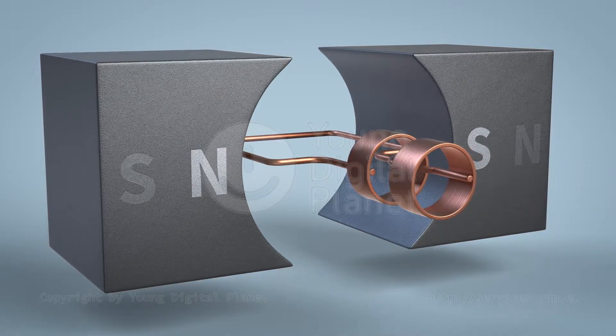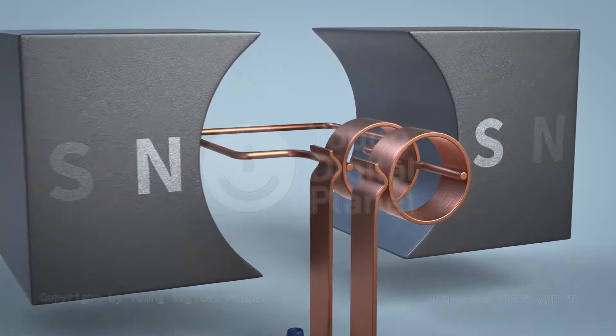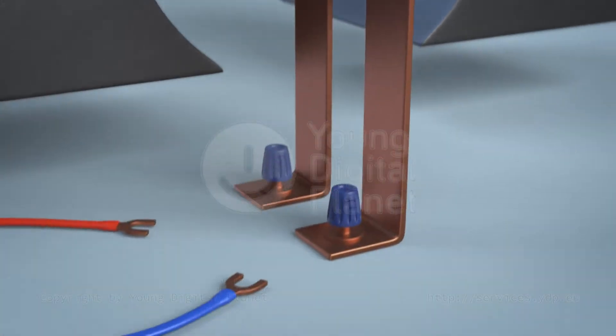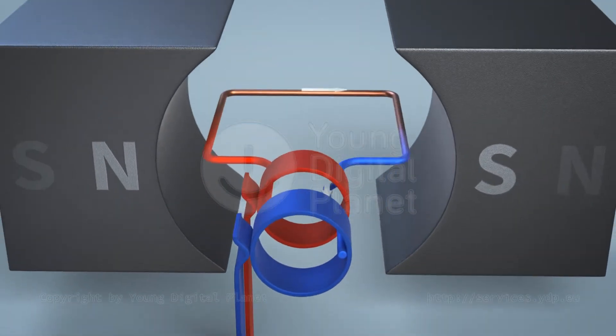We attach conductive rings to the ends of the conductor, which are in contact with two plates known as brushes. When voltage is applied, current starts flowing through the wire frame.